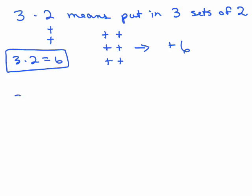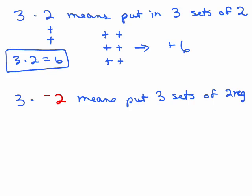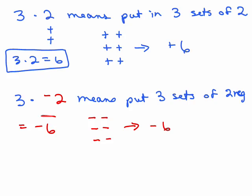Now let's do 3 times negative 2. Similarly, this would mean 3 sets of negative 2 — I'm going to think of that as 3 sets of 2 negatives. So we're going to think of those negative counters. I have one set of negative counters, 2 sets of negative counters, 3 sets of negative counters — that's negative 6. So we saw that a positive times a positive is a positive, and a positive times a negative is a negative.